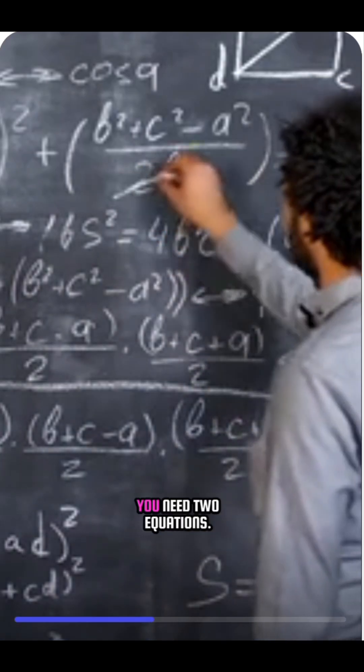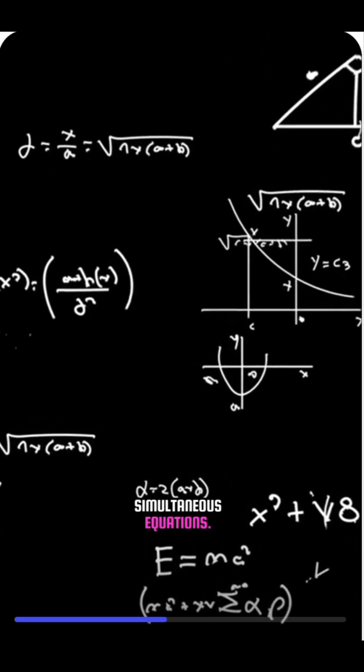To find a unique solution, you need two equations. That's why we later call them simultaneous equations.